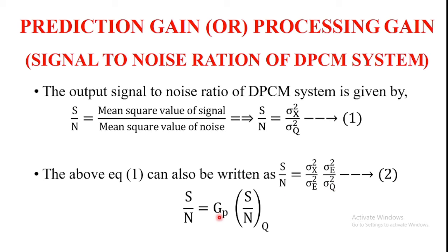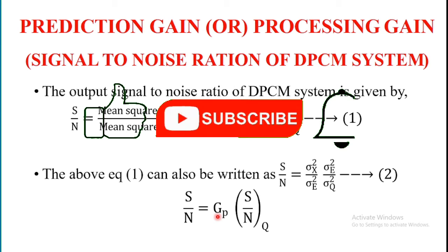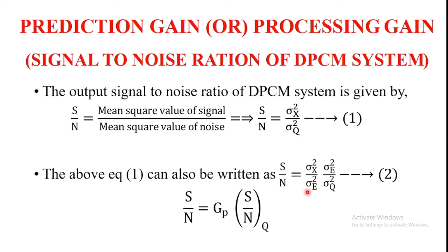So the RHS term of the equation is also written as G suffix P into S by NQ, where S by NQ is the signal to quantization noise ratio — that is, signal to quantization noise ratio equals sigma e square by sigma q square — and G suffix P is the processing gain. The processing gain G_P is equal to sigma x square by sigma e square.